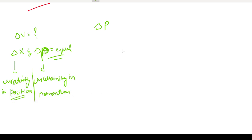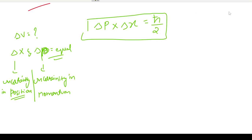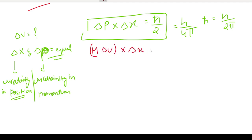The formula is: uncertainty in momentum × uncertainty in position ≥ ħ/2, where ħ = h/2π. Writing momentum as m·Δv, we get: m·Δv·Δx = ħ/2. Solving for Δv: Δv = ħ/(2·m·Δx).